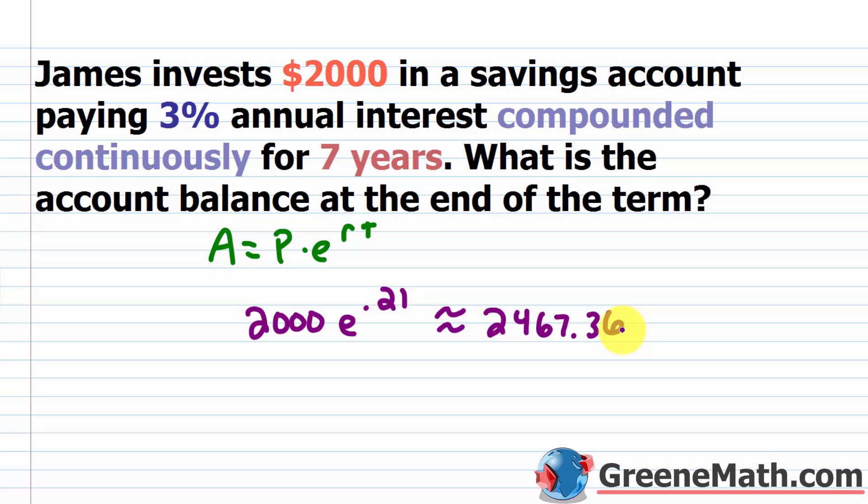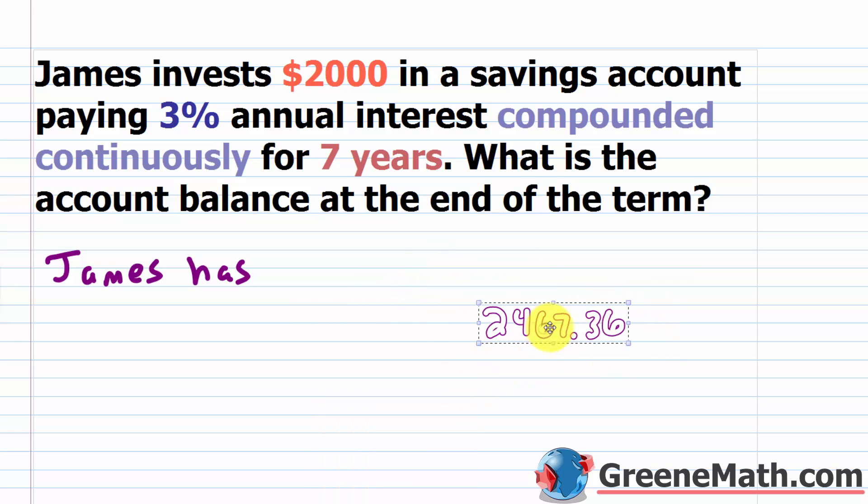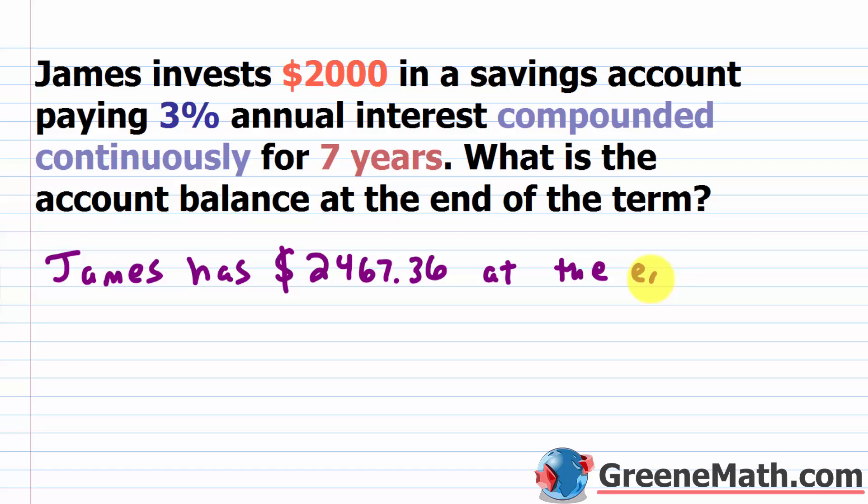So if you wanted to make a nice little sentence, you can. We'll just say that James has $2,467.36 at the end of the term.